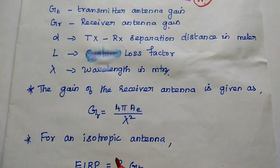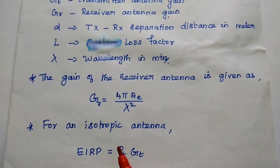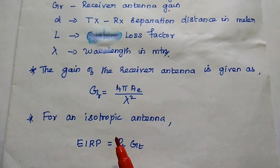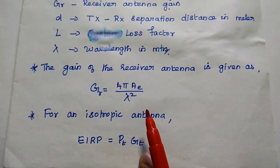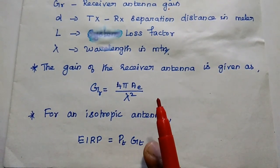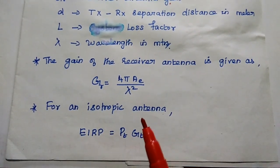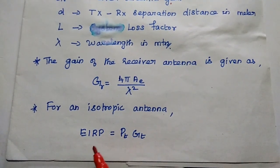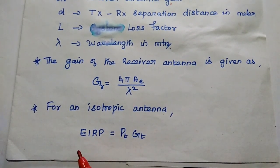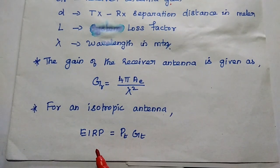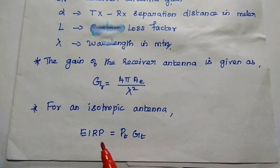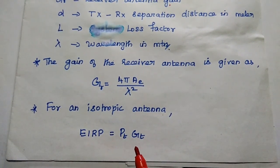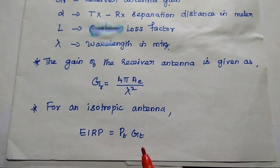The gain of the receiving antenna can be obtained using the formula 4π · AE / λ², where AE is the effective area of the receiver. For an isotropic antenna, the EIRP — equivalent isotropic radiated power — is nothing but the transmitted power multiplied by the transmitting gain.